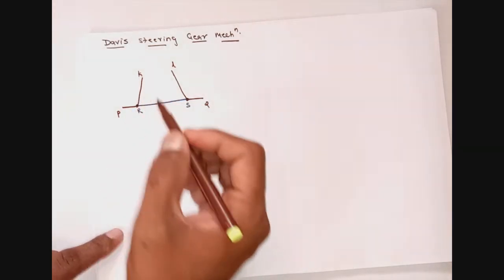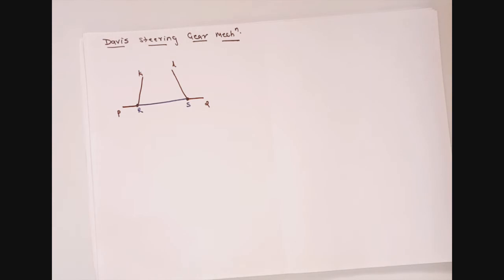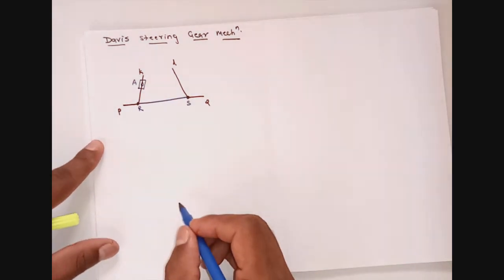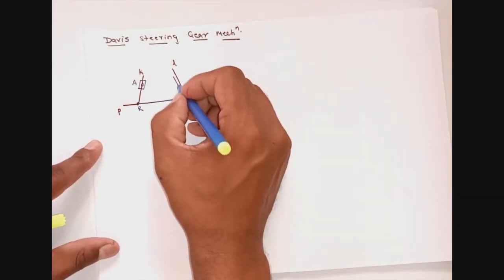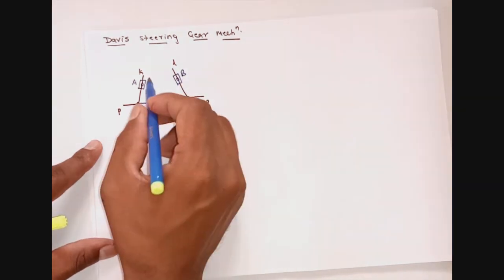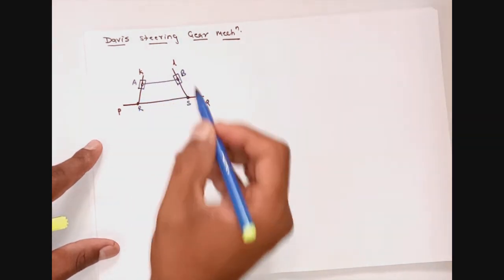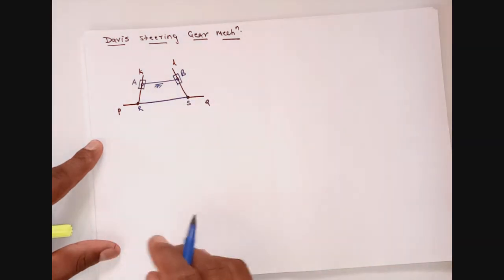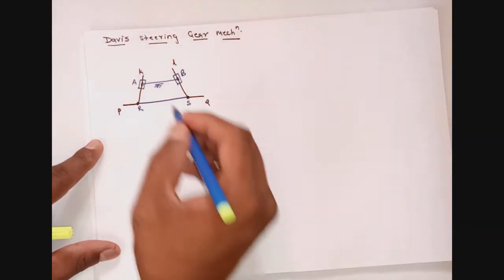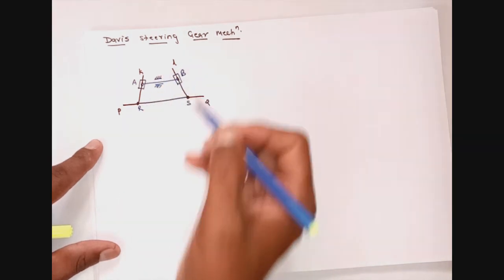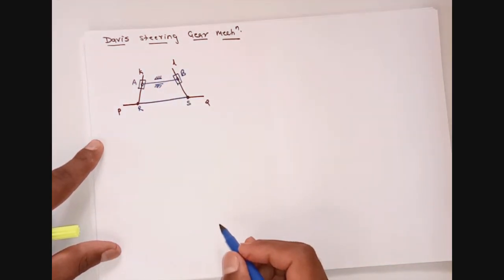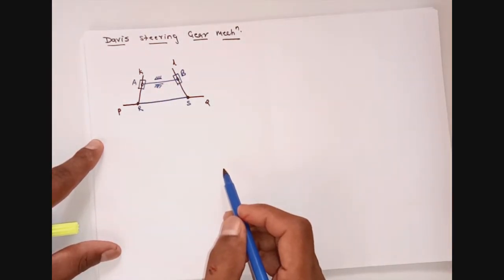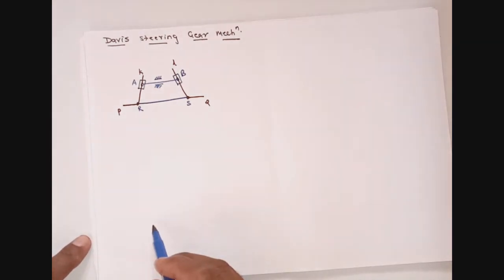On these bell crank levers there are two sliders: slider A on the left-hand bell crank lever, which is connected to slider B on the right-hand bell crank lever using a track arm. This track arm AB is constrained to remain horizontal during all steering conditions, and I am showing a horizontal guide for track arm AB. This is the Davis steering gear mechanism.